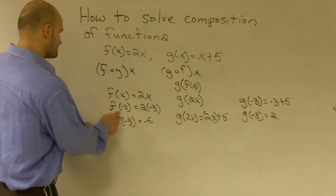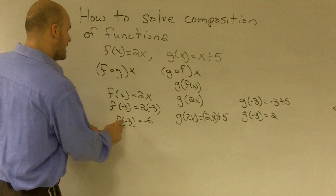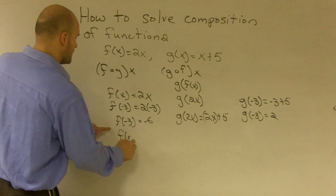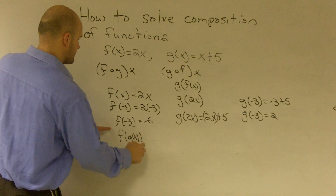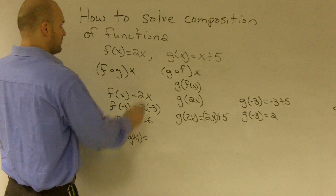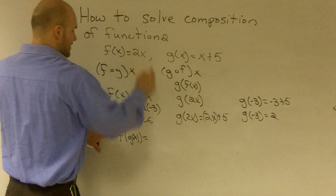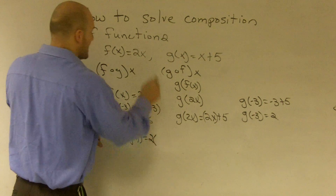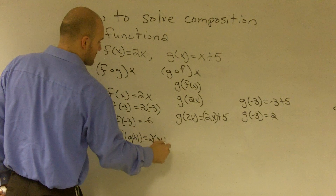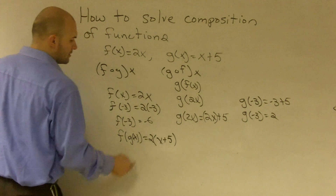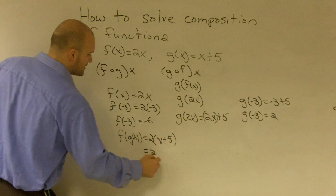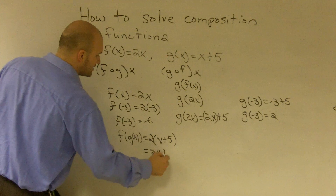Now, if I want to find f of g of x, I'm going to plug g of x in for x in my f function. So it will be 2 times, not x anymore, but x plus 5. Simplifying, that becomes 2x plus 10.